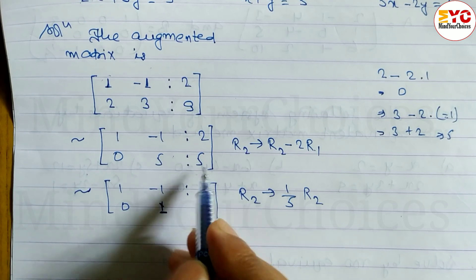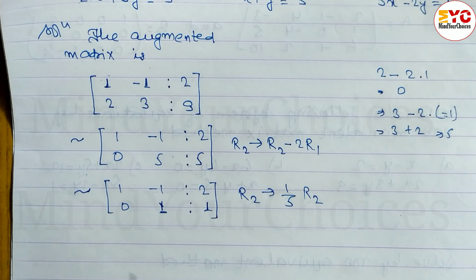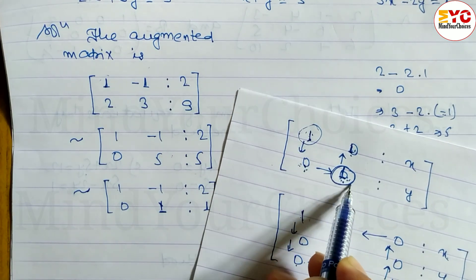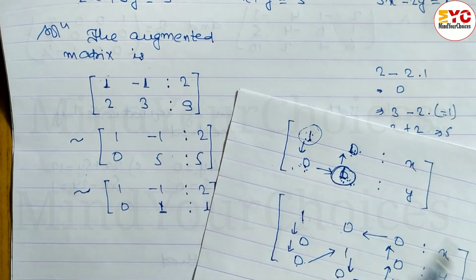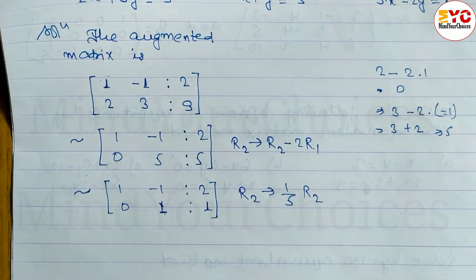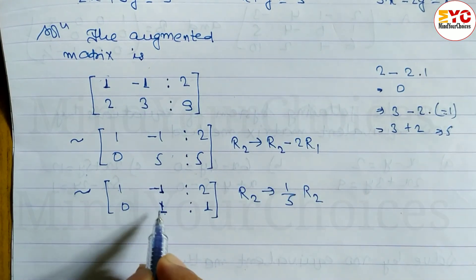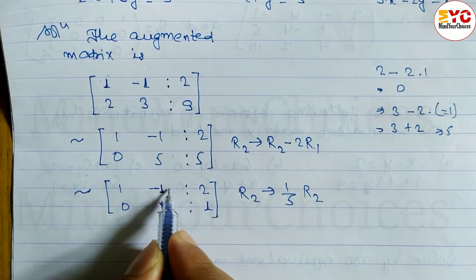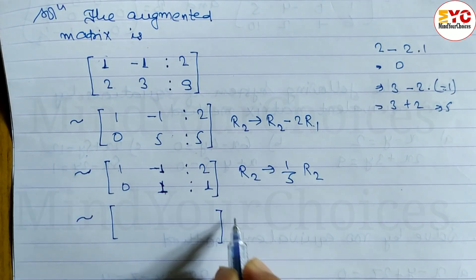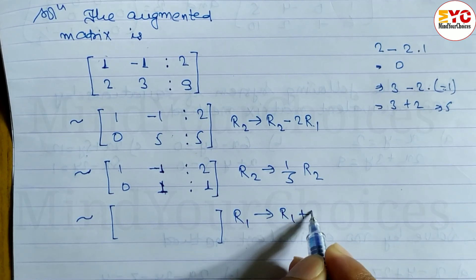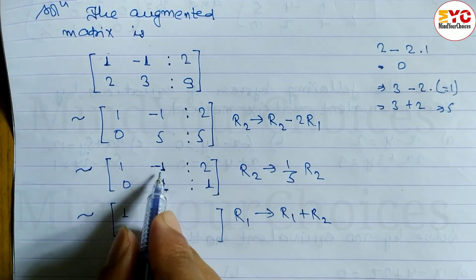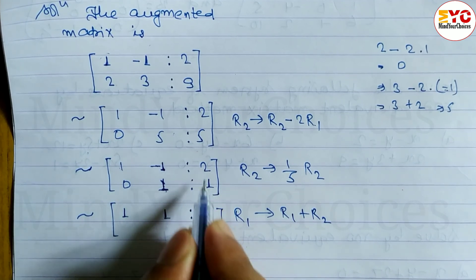Now we have one zero, zero, one — the identity matrix. We still need to make the top-right element 0. So R1 becomes R1 plus R2. We add: 1 plus 0 is 1, minus 1 plus 1 is 0, and 2 plus 1 is 3.